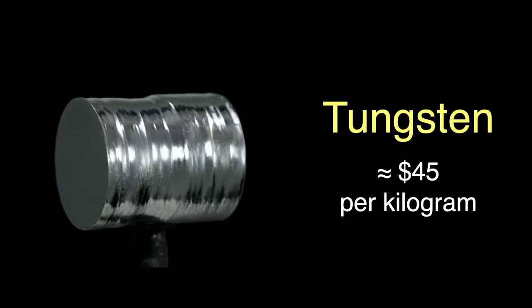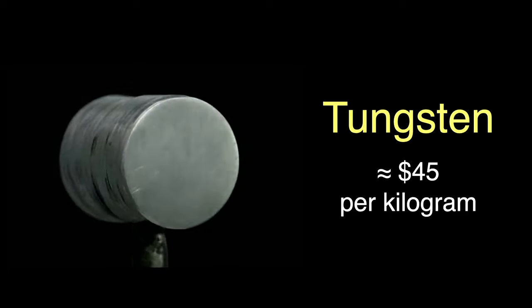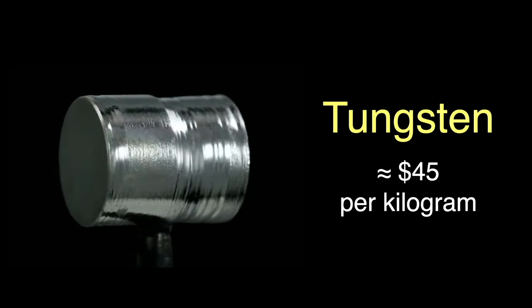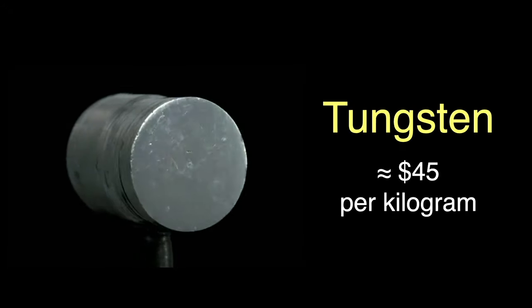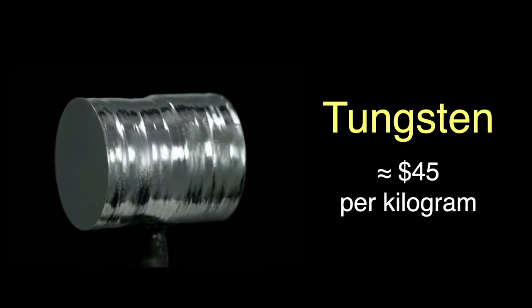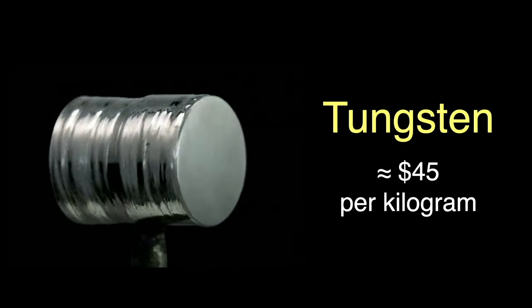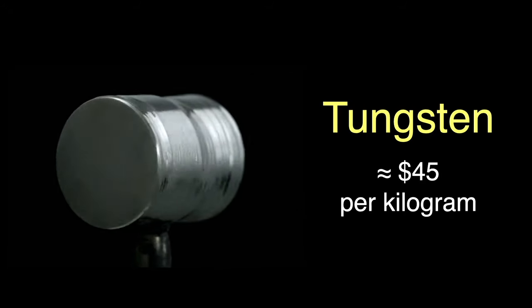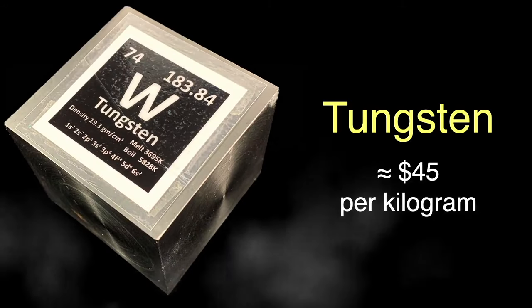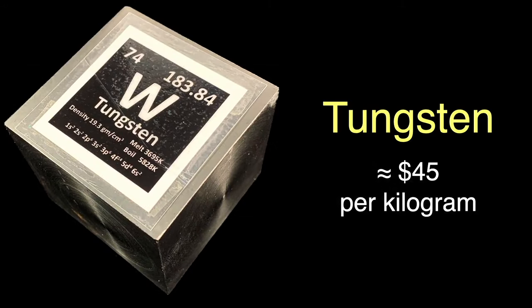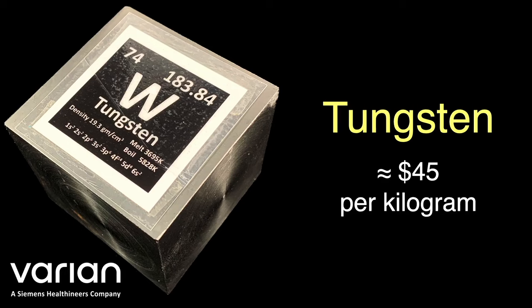As with most elements, the price of tungsten varies widely with purity and the quantity you buy. Tungsten goes for around $45 per kilogram. Because of its density, you don't get a lot of tungsten volume-wise for a given weight. For instance, my 2¼-inch tungsten cube has a mass around 3.5 kilograms, or about 8 pounds. This stuff is shockingly dense — I guess that means my cube is worth around $150. I'd like to thank Varian for providing this tungsten sample; we'll see a bit later how Varian uses tungsten.